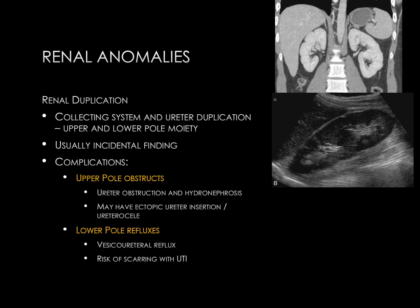Renal duplication has a characteristic pattern of complications in some patients. If the patient has complete duplication of the ureters, the upper pole is prone to obstruction. The ureter may have an ectopic insertion — for example, in females into the vaginal cavity — and it may also be associated with ureterocele. This results in hydronephrosis of the upper pole moiety, which may eventually atrophy and look cystic. The lower pole moiety has more characteristic vesicoureteral reflux, presenting a risk of scarring from ascending infection. This pattern is known as the Weigert-Meyer rule.